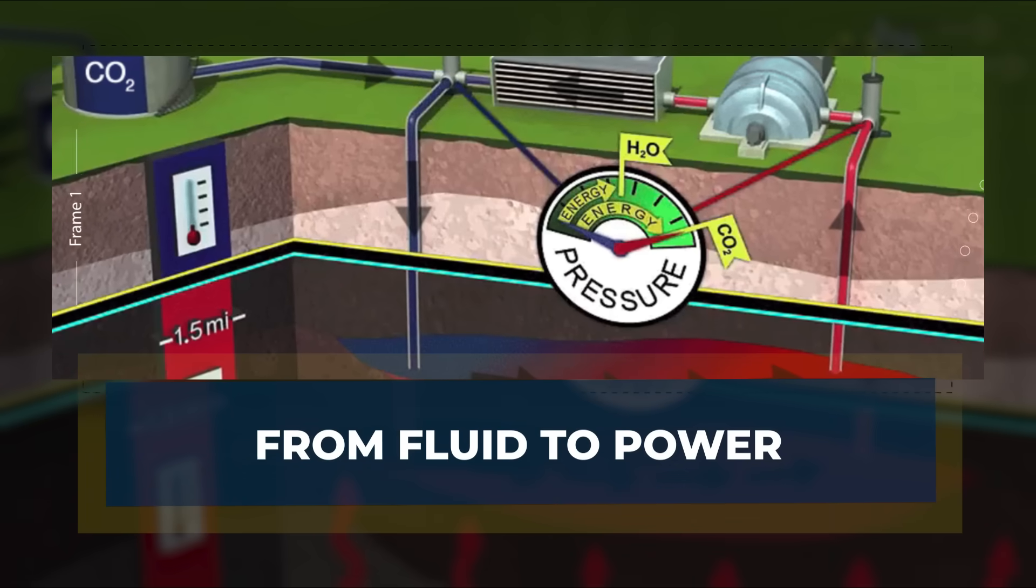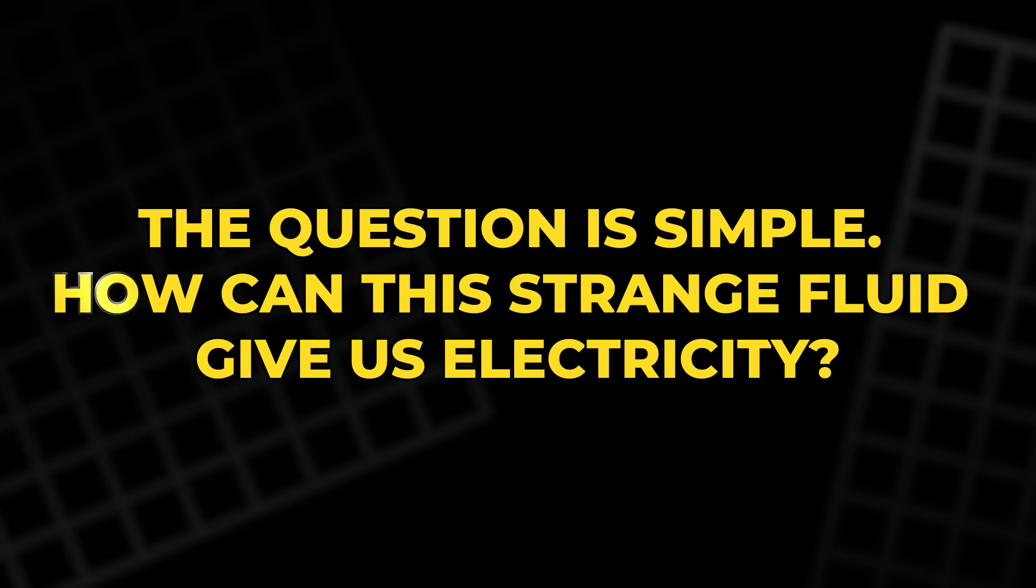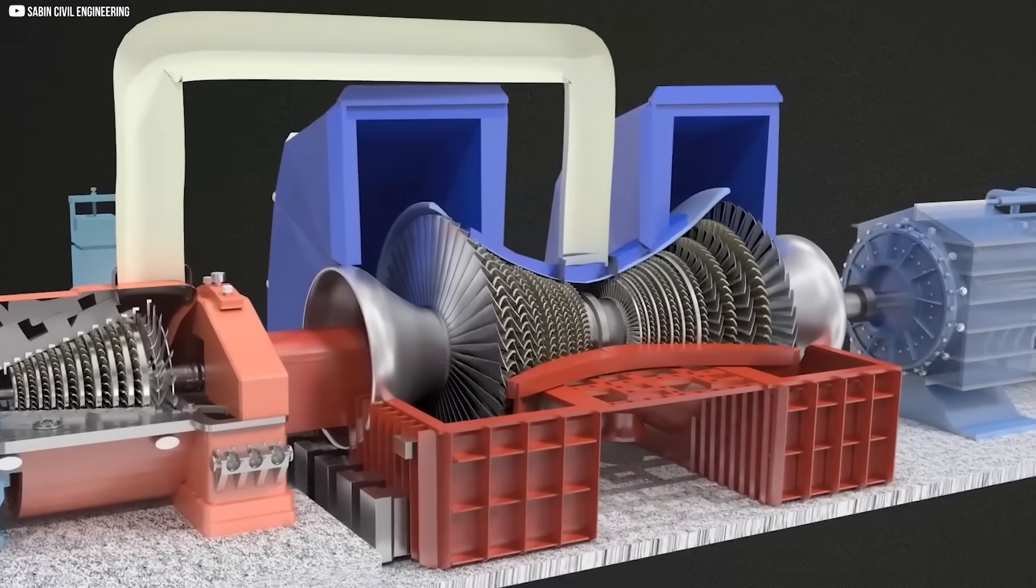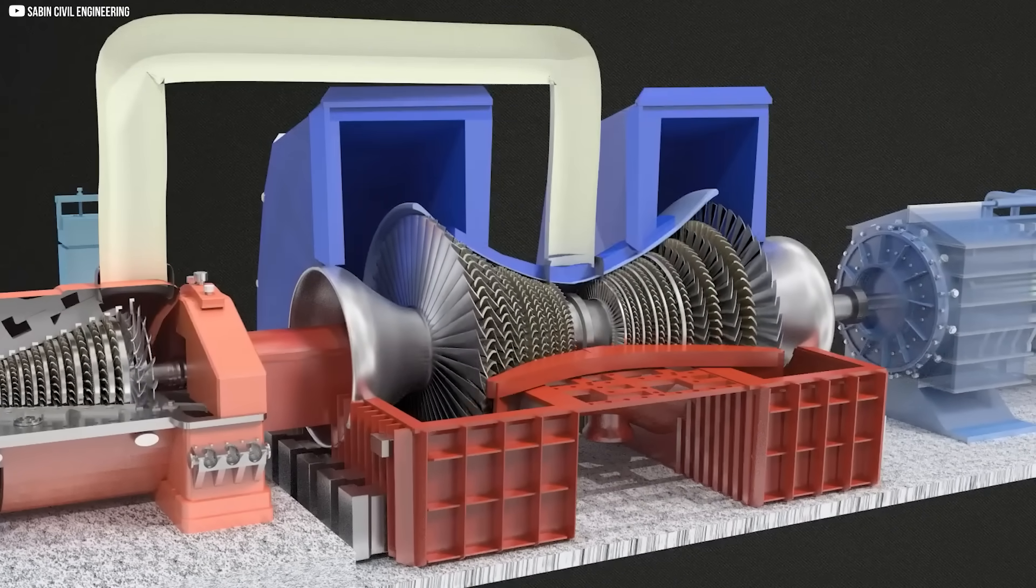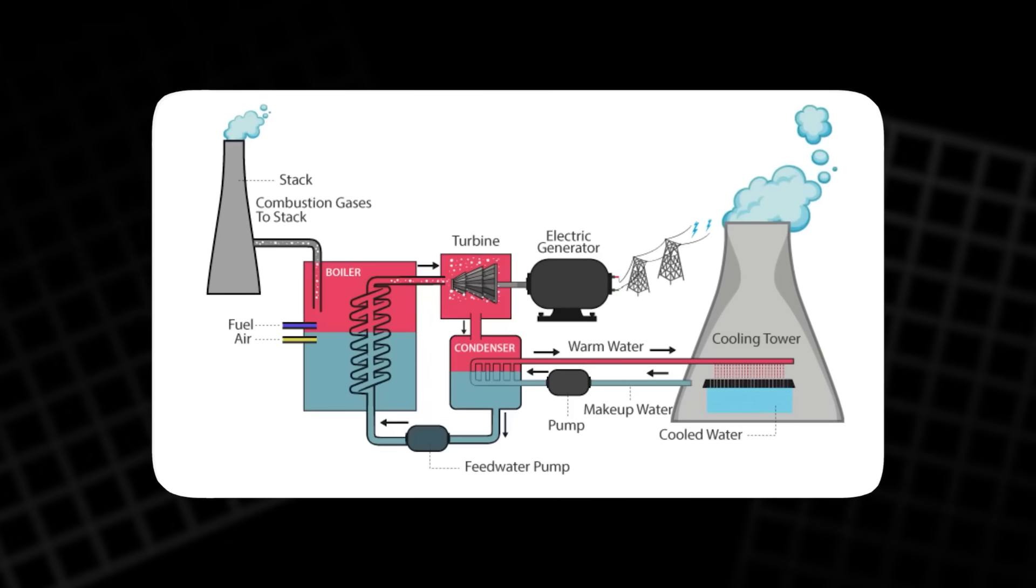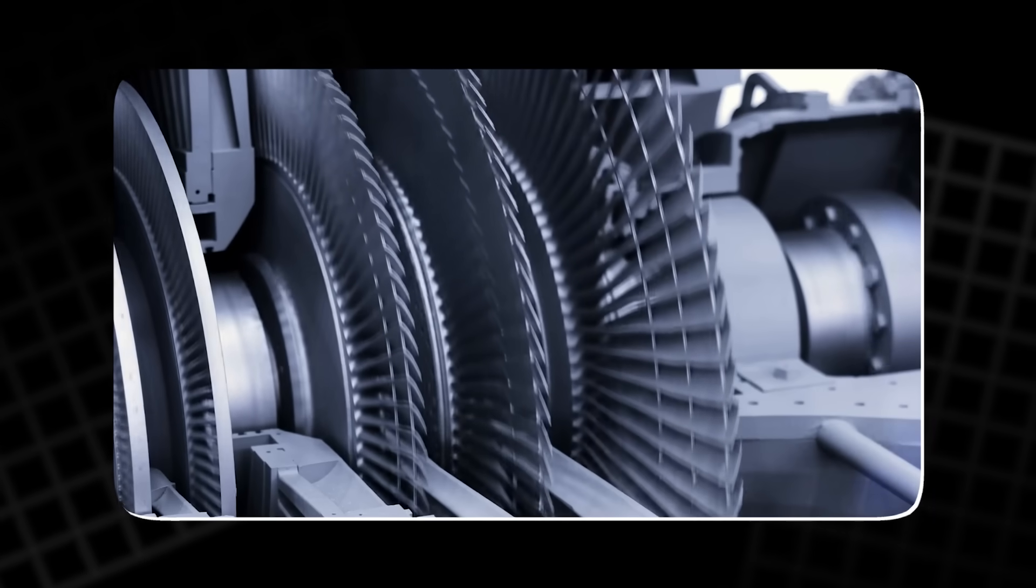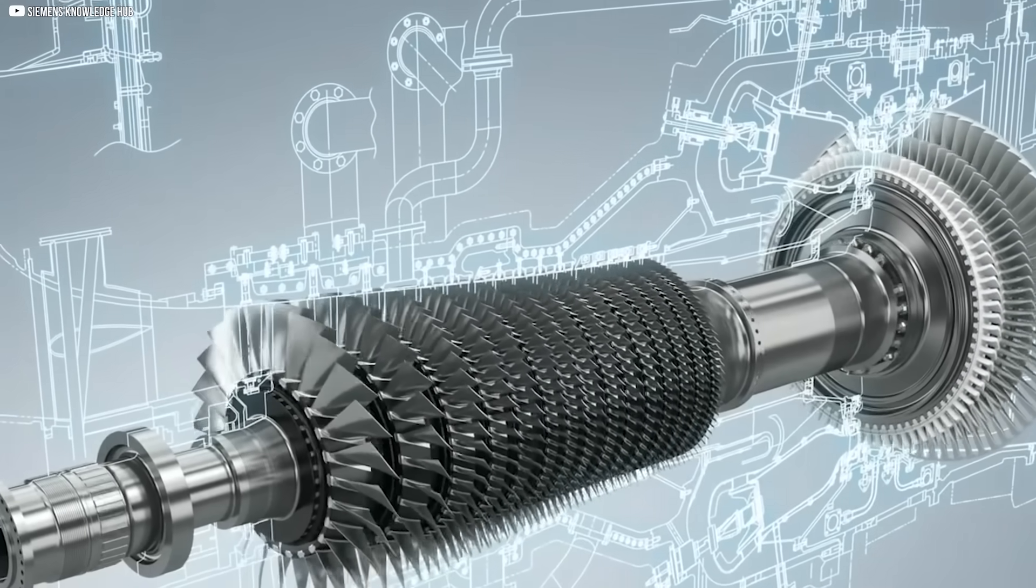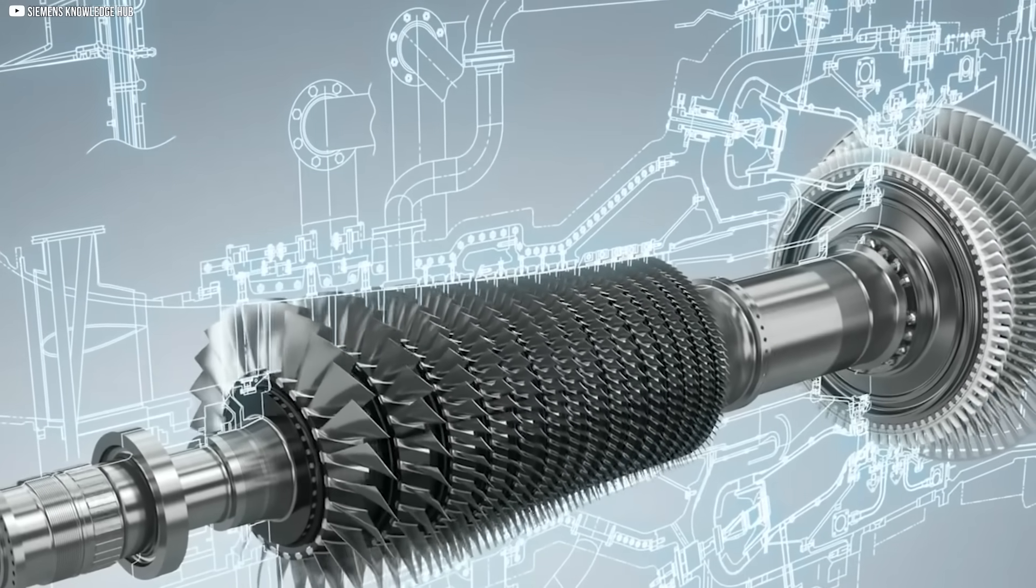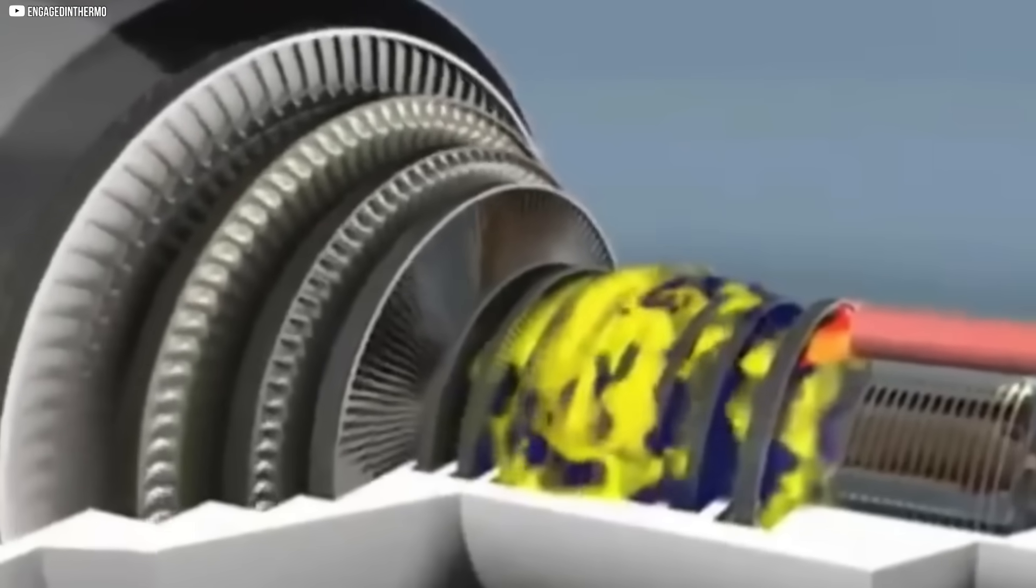From Fluid to Power. The question is simple: How can this strange fluid give us electricity? The answer lies in a process that feels familiar, but looks very different up close. In a steam turbine, water is boiled, turned into vapor, and forced through long blades. The rushing steam makes the blades spin, and that motion drives a generator.